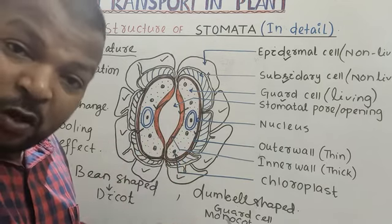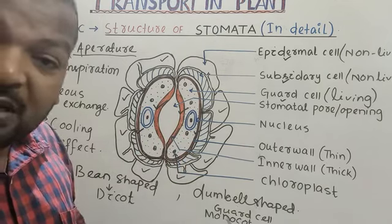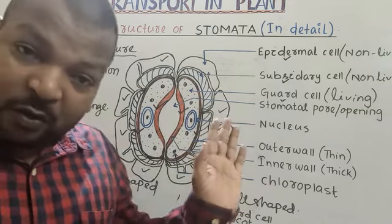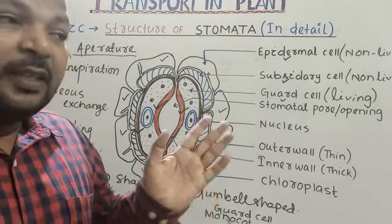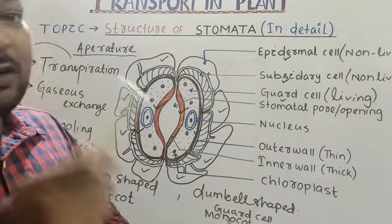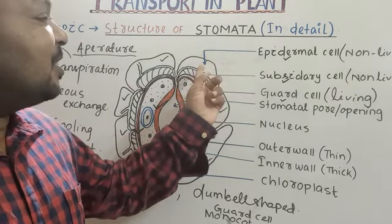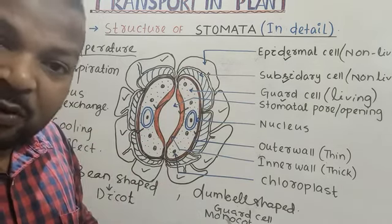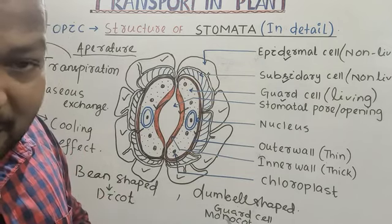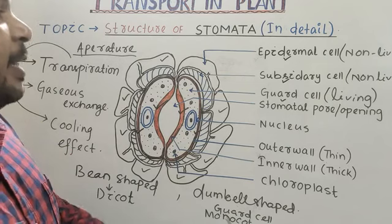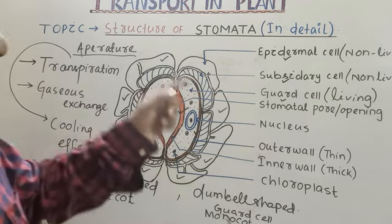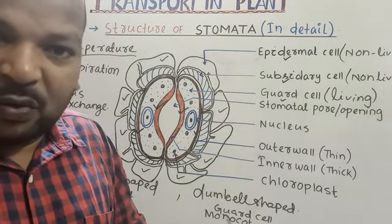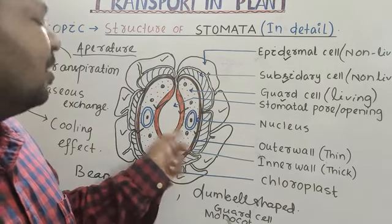Guard cell has chloroplast, hence it is autotrophic. Guard cell also has a nucleus, hence it is living. But subsidiary cell is non-living — it has no chloroplast and cannot photosynthesize — it is also non-living. A question that may come to mind: what is the function of epidermal cell and subsidiary cell? They provide additional support and additional strength for the guard cell.